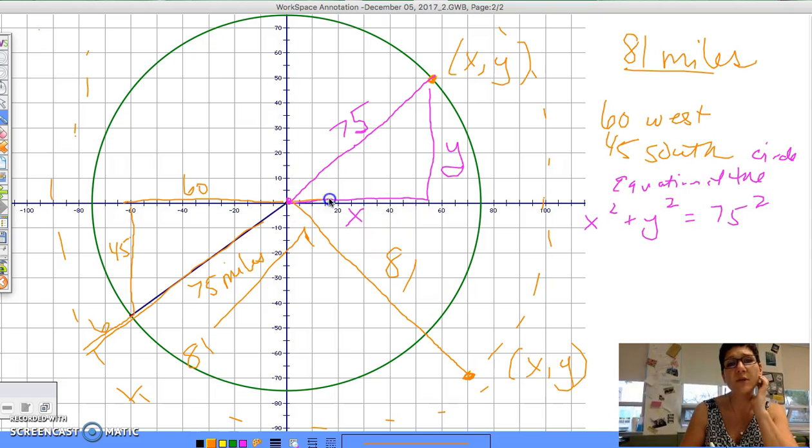And again, if you create a right triangle, that distance in orange is my horizontal distance, which is x, and my vertical distance is y.